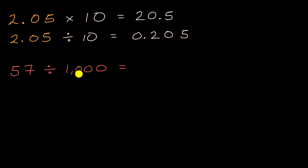When you divide by 1,000, that's the same as dividing by 10 three times, or multiplying by one-tenth three times. That means we shift each digit three places to the right. Let me create some places here: tens, ones, tenths, hundredths, thousandths.